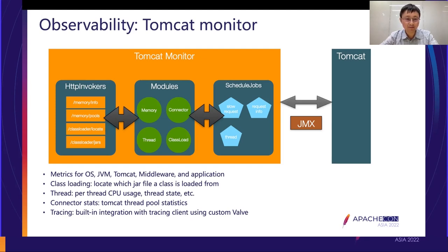Tomcat Monitor also shows the state and CPU usage of every thread, as well as connector stats — for example, which slowest requests are currently inside Tomcat. For the tracing part, we have built-in integration with a tracing client using custom Tomcat valves, integrated with our existing tracing systems so that traces are correctly collected.